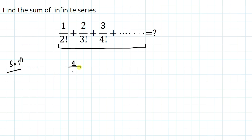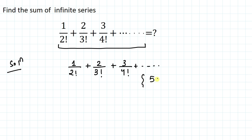We have given 1/2! + 2/3! + 3/4!, and the series goes up to infinity. Before proceeding, what is a factorial? Factorial is the product of all positive numbers up to the given positive number. For example, 5! is 1 × 2 × 3 × 4 × 5 — it stops at the given number.